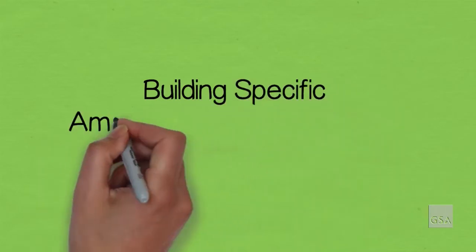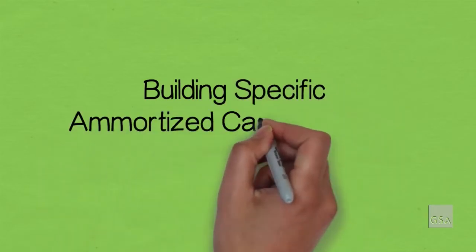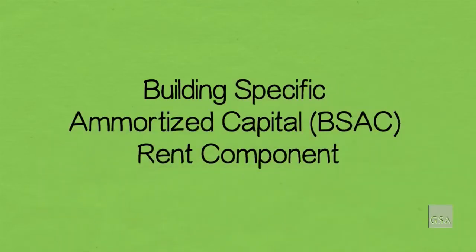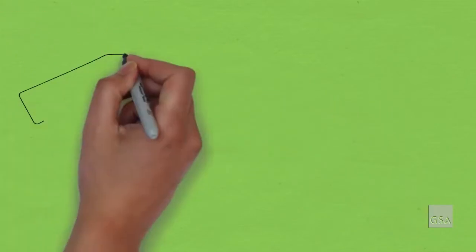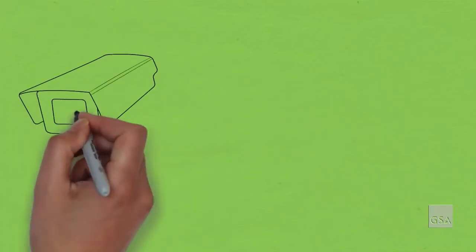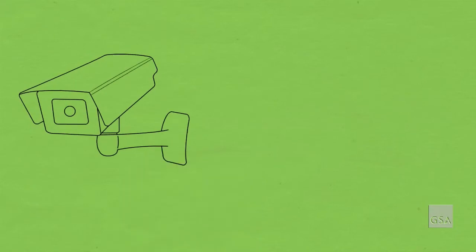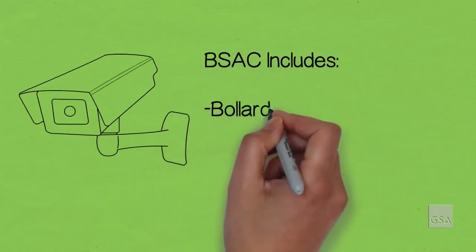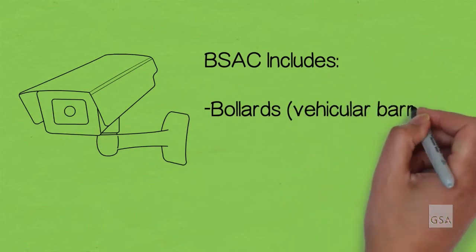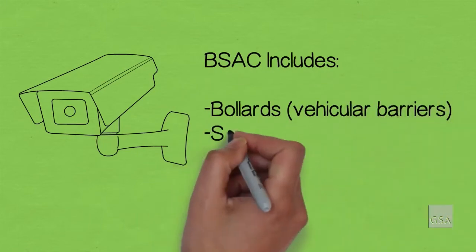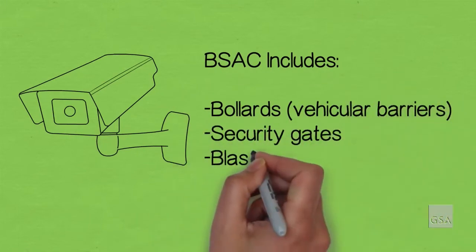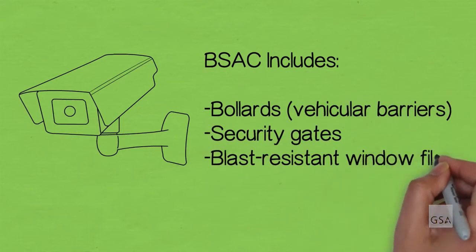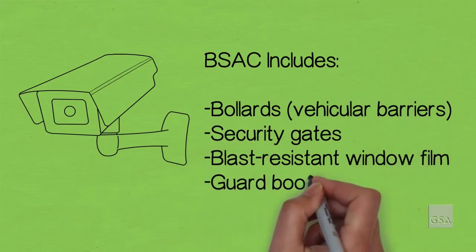Security countermeasures are priced as shell items or building-specific amortized capital. The building-specific amortized capital, or BSAC charge, is for specific security items that are part of or attached to a building that cannot be easily removed. Examples of these items include, but are not limited to, bollards or vehicular barriers, security gates, blast-resistant window film, and guard booths.